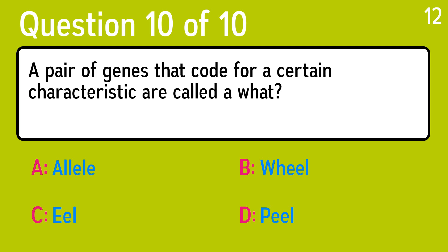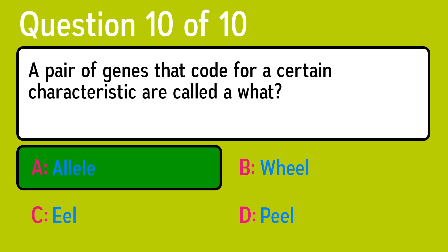And the last question is: a pair of genes that code for a certain characteristic are called a what? The correct answer is A, allele. I hope you enjoyed this quiz — make sure to share your score in the comments.